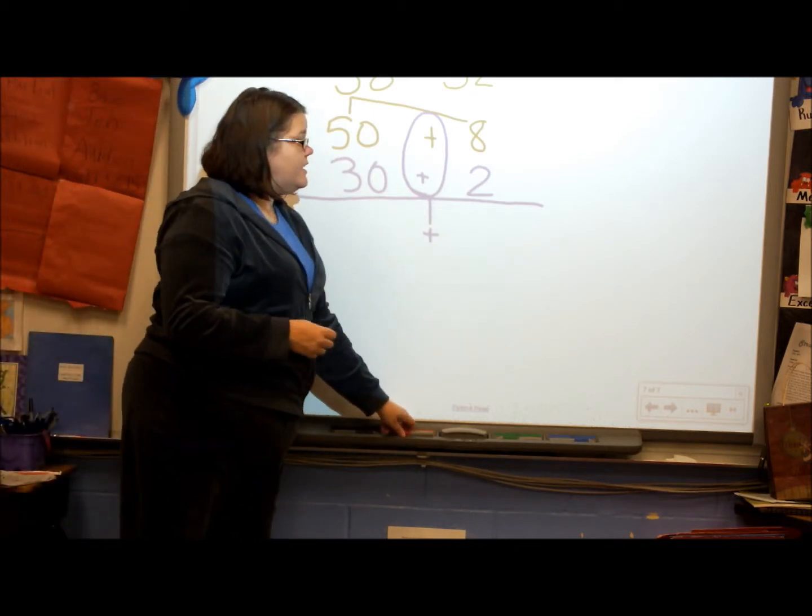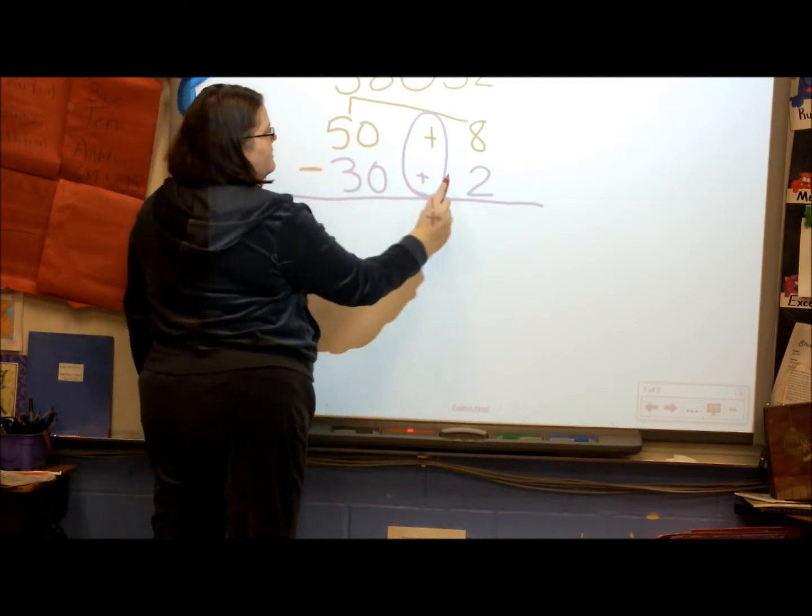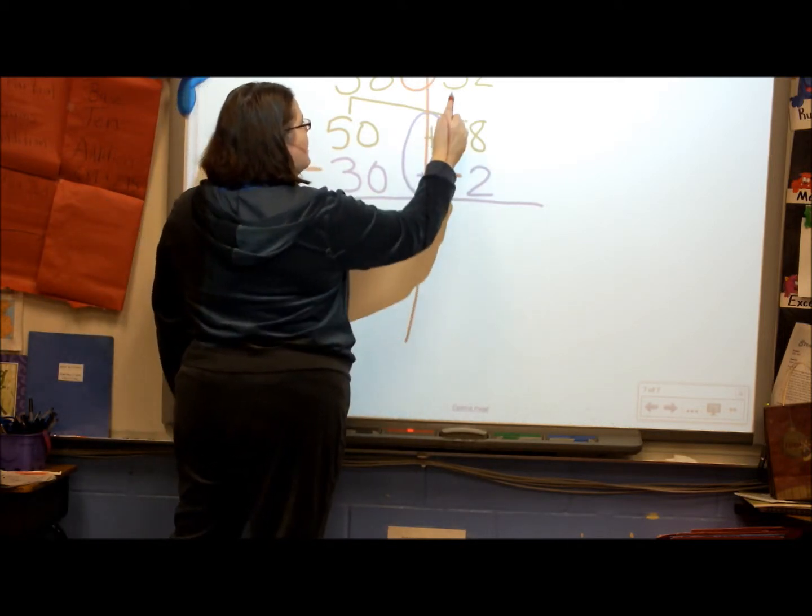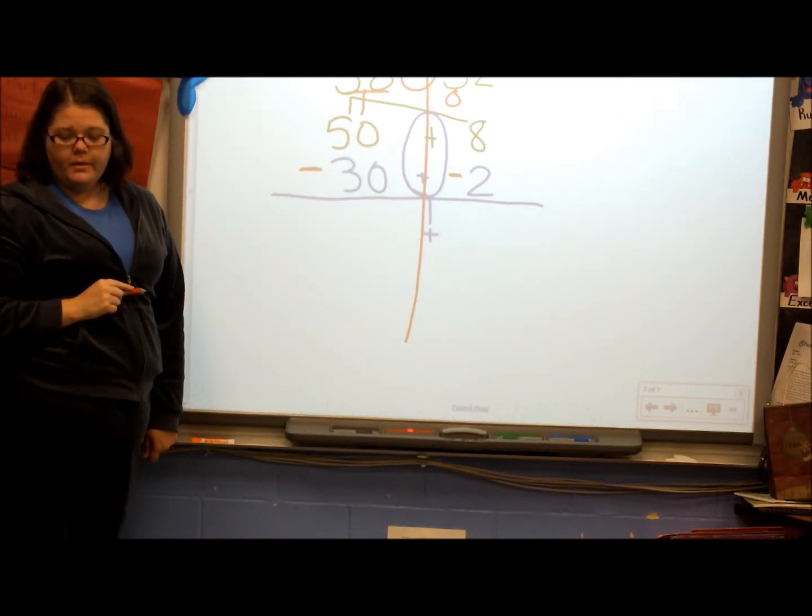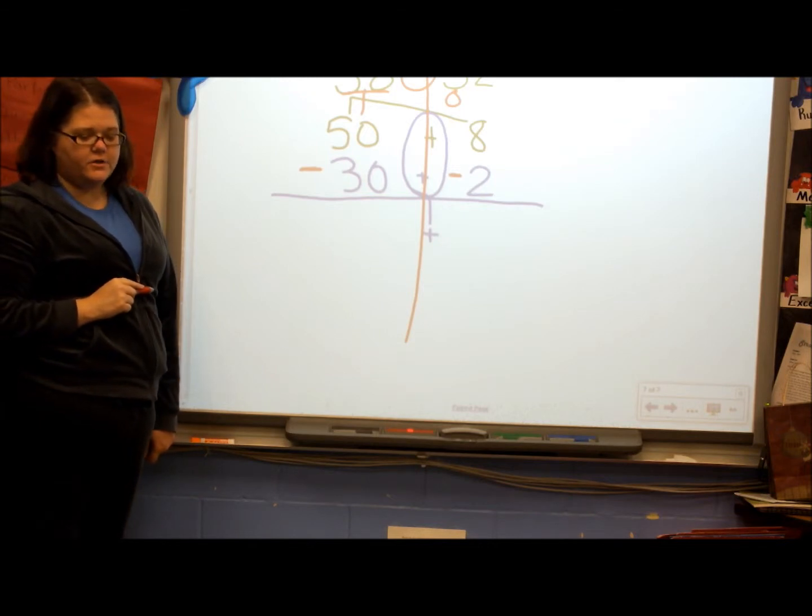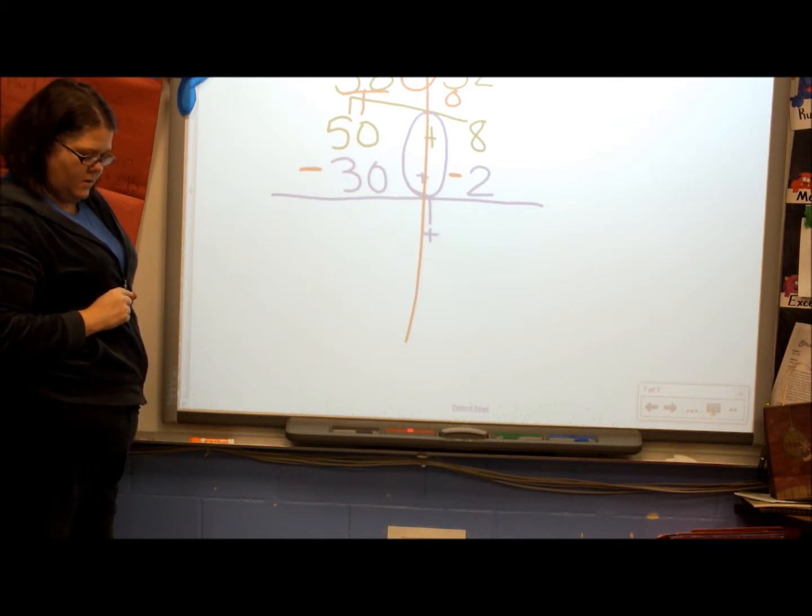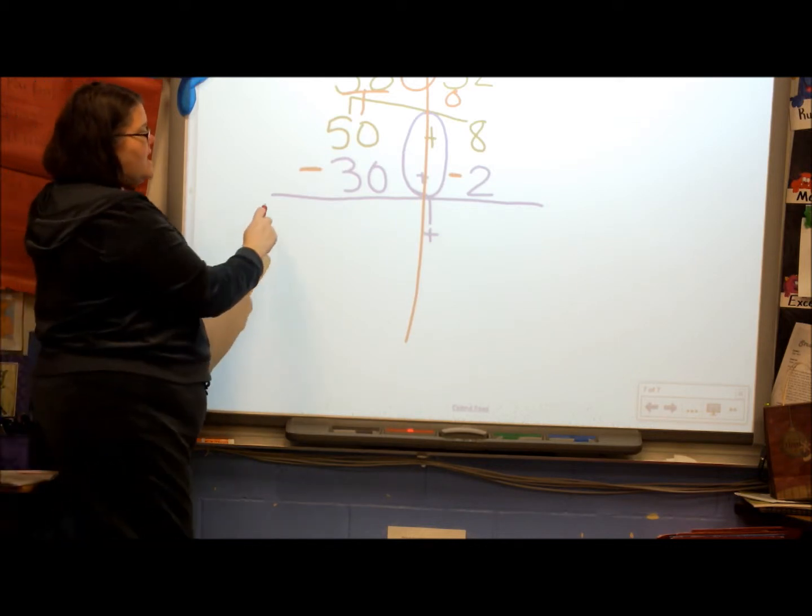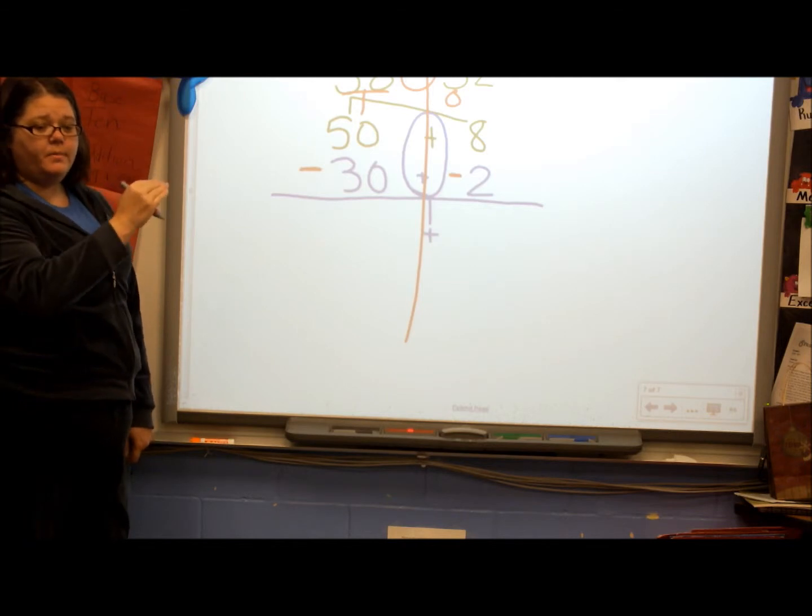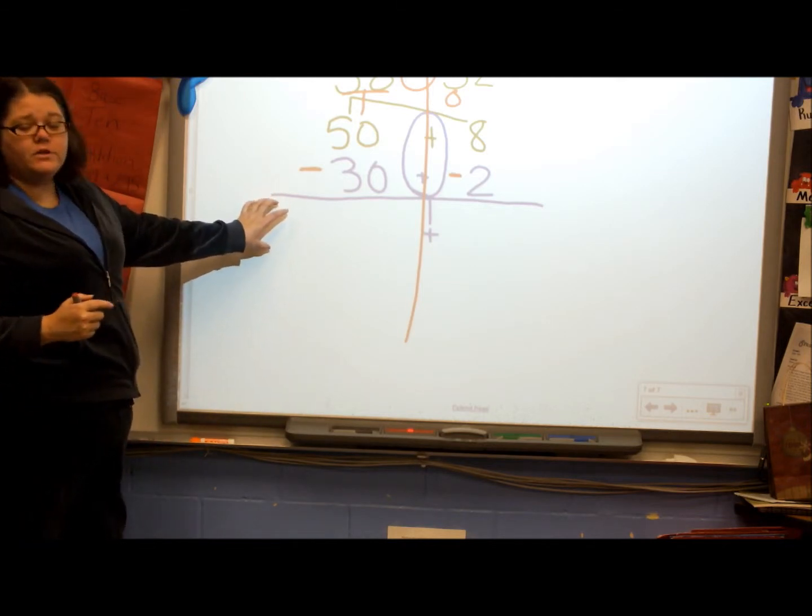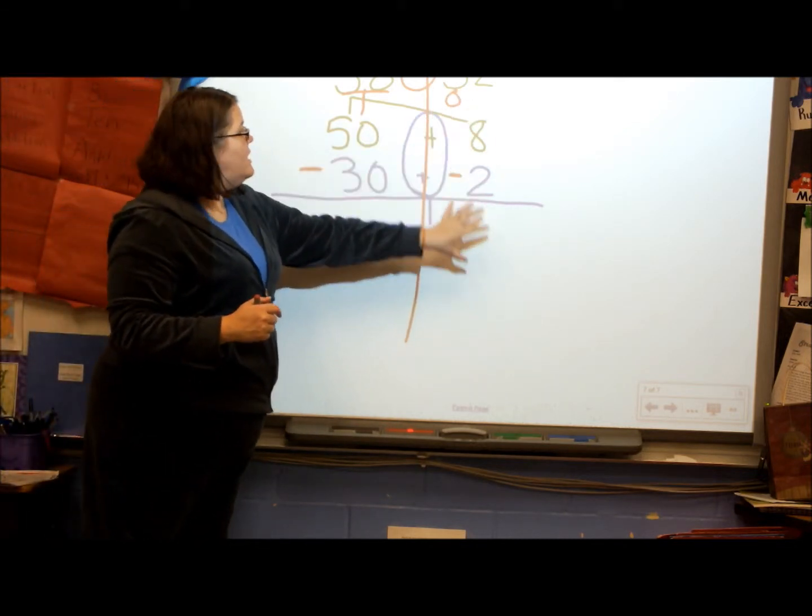Now we're going to be able to do our subtraction. I'm going to go in with a different color and make my minus sign. Here's my ones column. Here's my tens. Notice that I have a line underneath the 30 and the 2, because like when we do partial sums, we have a place to go. This is our ones. This is our tens.